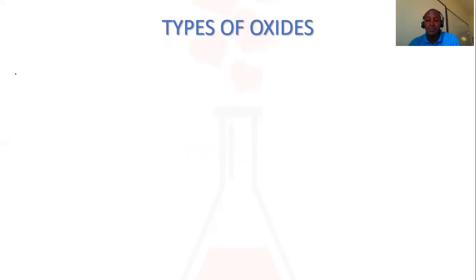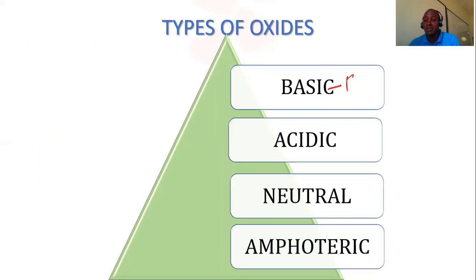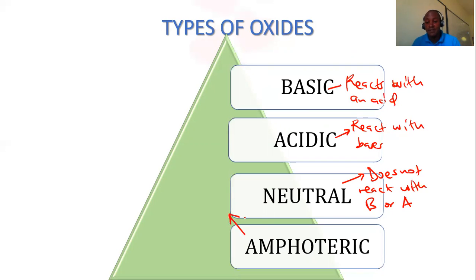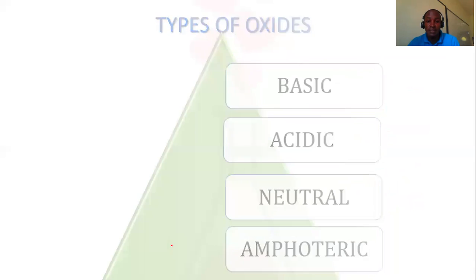So we mainly have four types of oxides. We have the basic oxide — this oxide will be able to react with an acid. We have the acidic oxide — these are oxides which will be able to react with bases because they are acids. Neutral oxides will not be able to react with any; a neutral oxide does not react with either a base or an acid. Then we have amphoteric — kind of the opposite of neutral — this one will be able to react with both acids and bases.